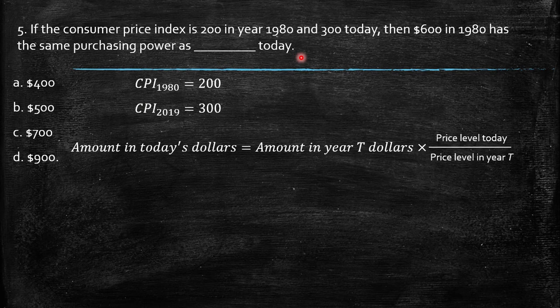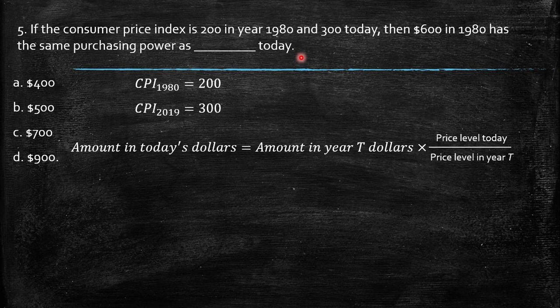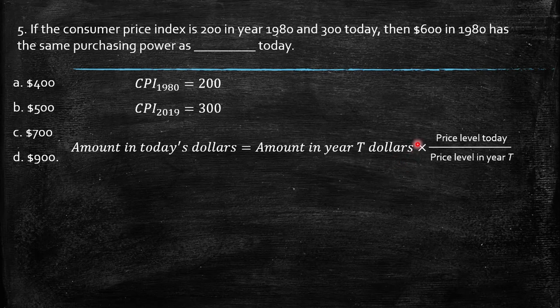So remember the question that we developed during the chapter. We have to consider that the amount in today's dollars is exactly the same as the amount in year T dollars times the ratio of the price level today over the price level in that year. So the amount in today's dollars should be exactly equal to the amount in year T dollars. So this year T is 1980, so it should be 600 times 300 over 200.